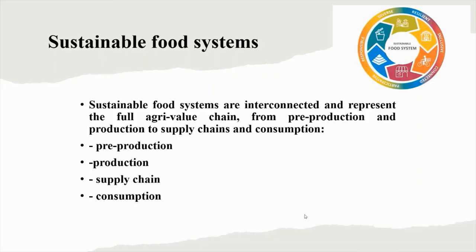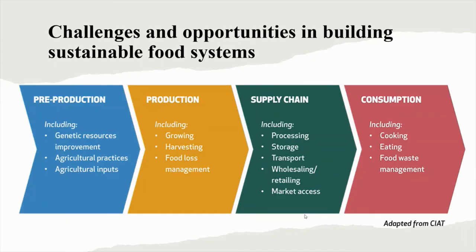Sustainable food systems are interconnected and represent the full agri-value chain, from pre-production and production to supply chains and consumption. Challenges and opportunities in building a sustainable food system are based on different stages. Pre-production includes genetic resources improvement, agricultural practices, and agricultural inputs. Production includes growing, harvesting and food loss management. The supply chain includes processing, storage, transport, wholesaling or retailing, and marketing access. The consumption stage includes cooking, eating and food waste management.